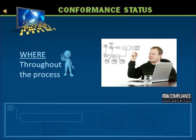The types of facilities responsible for meeting these requirements shall also identify, by suitable means, the acceptance status of product to indicate the conformance or non-conformance of these items. The identification of acceptance status shall be maintained during manufacturing, packaging, labeling, sterilization, installation, and servicing of the product to ensure that only those which have passed the required acceptance activities are distributed, used, or installed. See Section 820.86 of the QSR for details.